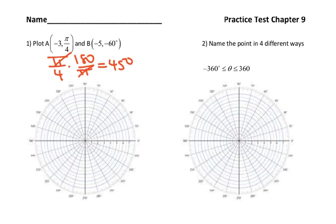So first you find 45 degrees, which is here. But a radius of negative 3 means that you go in the opposite direction, three circles out. And as long as you give some scale, I think I see where 3 is. It looks like it's about here. So there's point A.